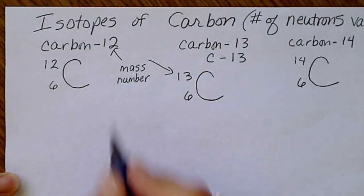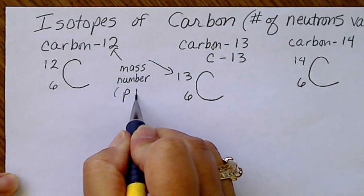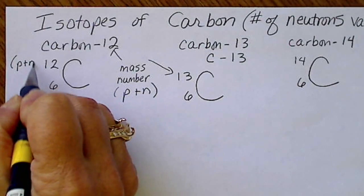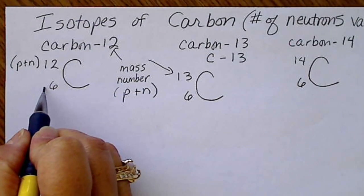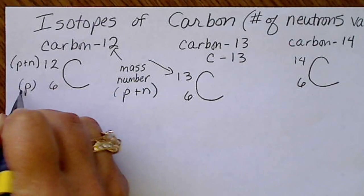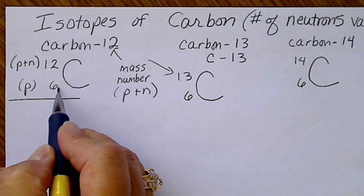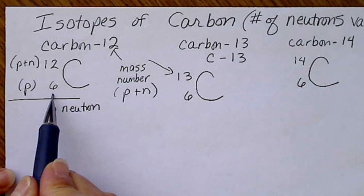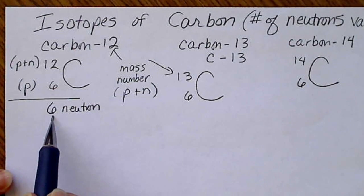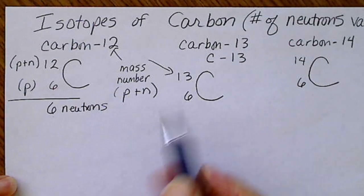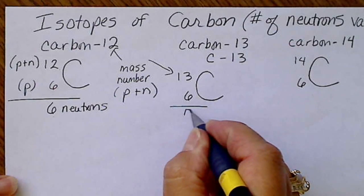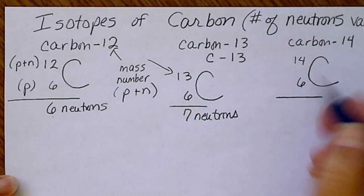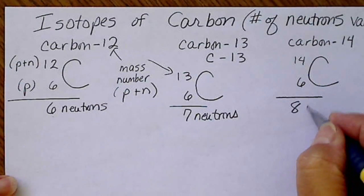The mass number — if you look at the class notes, you'll see the definition — is always the protons plus the neutrons. So if this number represents protons plus neutrons, and the atomic number represents the number of protons, then subtracting the atomic number from the mass number gives us the number of neutrons. Carbon-12 must have 6 protons to be carbon, so it has 6 neutrons. Carbon-13 has 7 neutrons, and carbon-14, because 14 minus 6 is 8, has 8 neutrons.